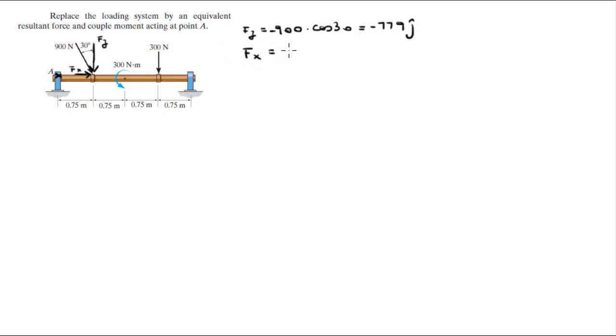And F is equal to 900 sine of 30, which comes out to be 450 in the i direction.